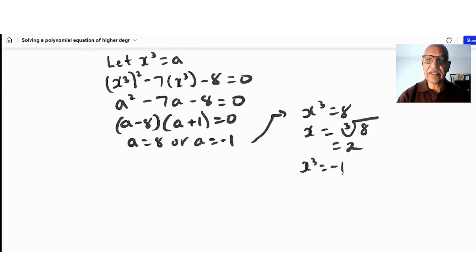which is -1. Therefore, my answers are x = 2 and x = -1. These are the two solutions for this problem.